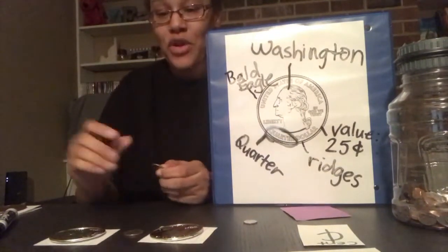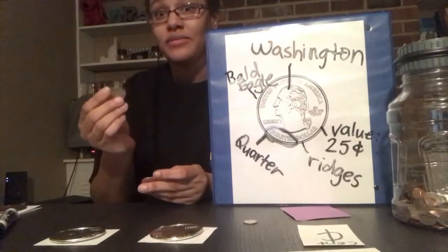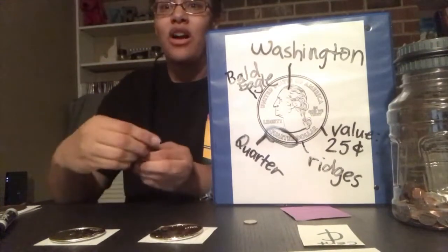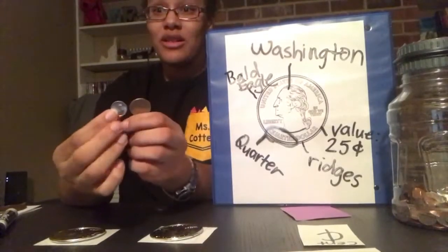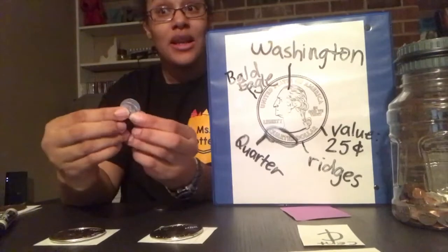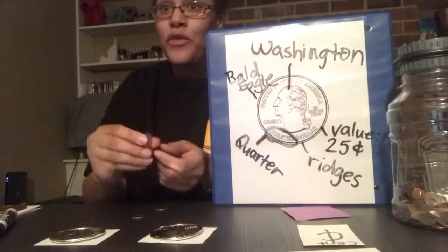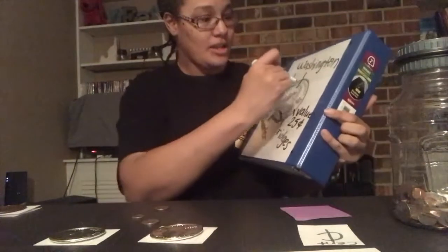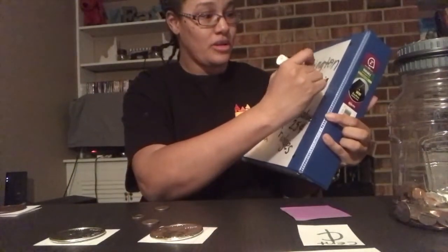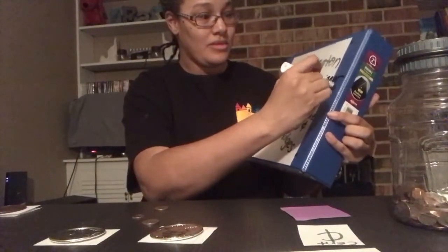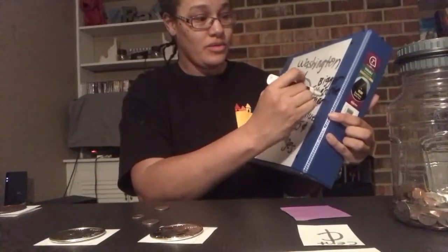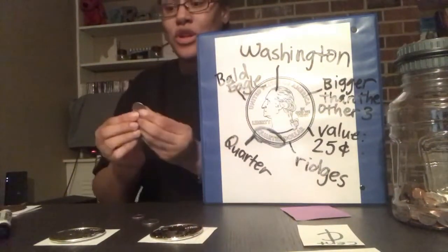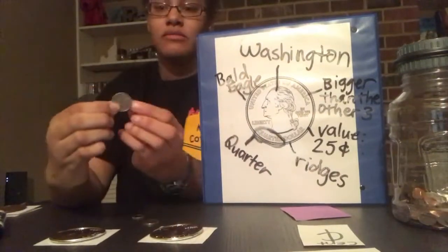You have to remember that a quarter is worth 25 cents. It has George Washington on the head side, and there are ridges. It's bigger than a dime — not the biggest coin overall, but bigger than a dime. Out of the four coins, it's bigger than the other three. The most important things to remember are that George Washington is on the head side and it has ridges.